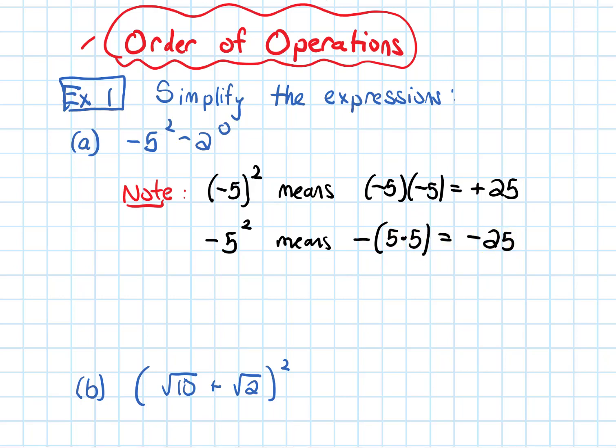So we need to be careful there. If I use that here, 5 squared is 25, then we put the negative out in front. Similarly 2 to the 0 is 1, and then we put the negative in front of it. And negative 25 minus 1 is negative 26, and that is our answer.